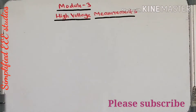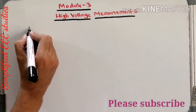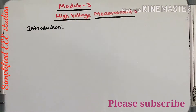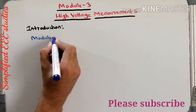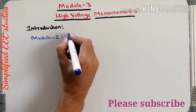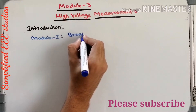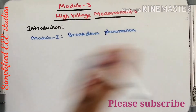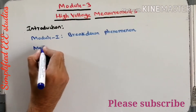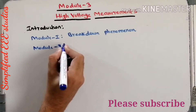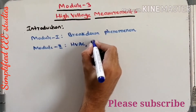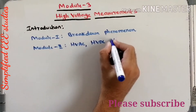In this module, we will be mainly dealing with different types of high voltage measurement techniques. In module 1, we discussed different types of breakdown phenomena of dielectric materials. In the second module, we learned how to generate high voltage AC, high voltage DC, and impulse waveforms.